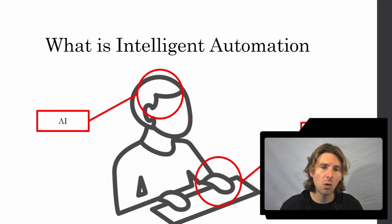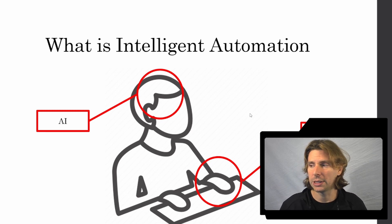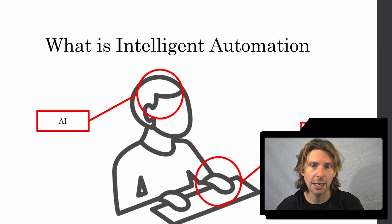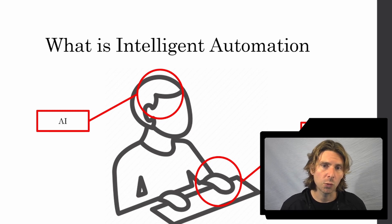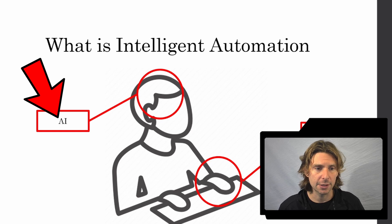Now with Power Automate and with RPA we can automate the repetitive and the manual, as we can see in this slide. We automate the manual and repetitive tasks. But with AI we automate the cognitive tasks.